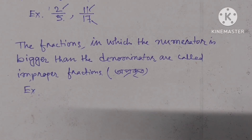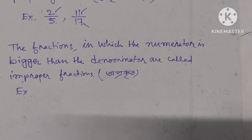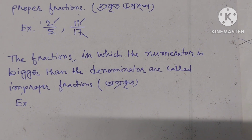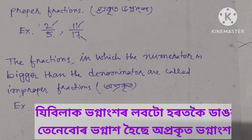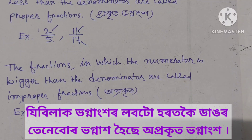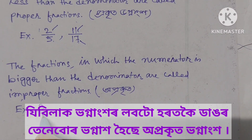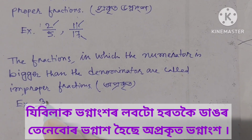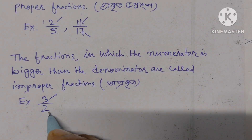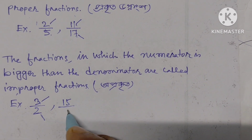Now, improper fractions. The fractions in which the numerator is bigger than the denominator are called improper fractions. For example, 3 by 2 - here the numerator is bigger than the denominator - and 15 by 8.